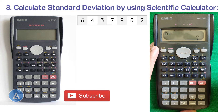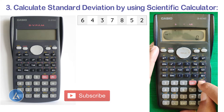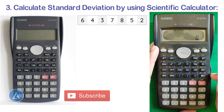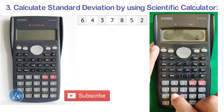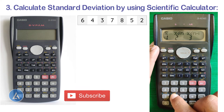Once our data is complete, press AC — that clears the screen. Don't worry, your data is still safe in memory. For the next step, to calculate standard deviation for both population and sample, press Shift and select the S-Variation option, which is on number key 2.